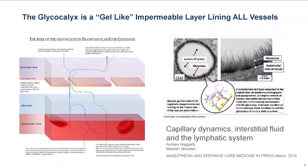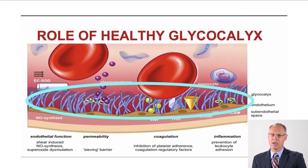The glycocalyx is a gel-like impermeable layer that lines all blood vessels down to the 5 micron level. There are approximately 60,000 to 100,000 miles of arteries, veins, and lymphatics in our body. The glycocalyx is fourfold in its role: it improves endothelial function; as its little hairs move, it produces shear force that releases nitric oxide; it decreases permeability and prevents fluid reabsorption into the veins as the classic Starling model described; it inhibits platelet adherence and has an important impact on coagulation regulatory factors; and it prevents inflammation by preventing leukocyte adhesion, which can increase the risk of chronic venous disease.